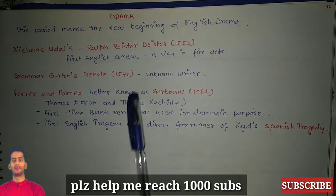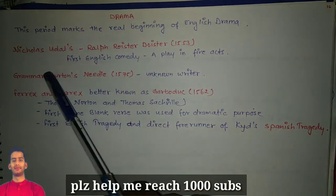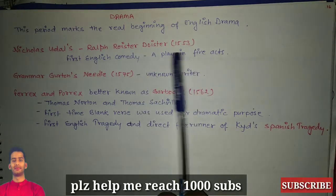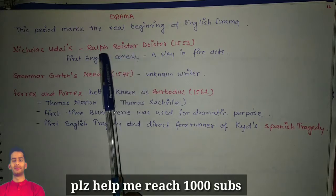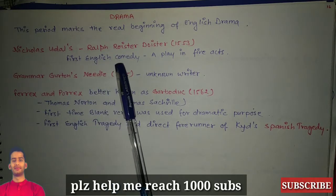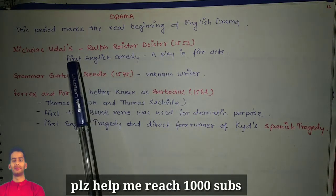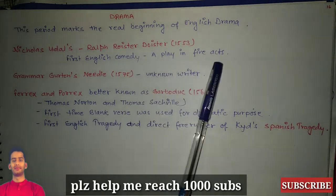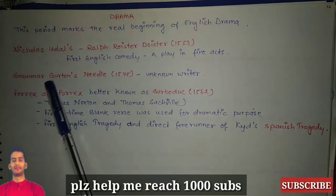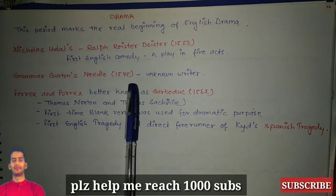There are different topics in the Renaissance period. First, we are going to talk about drama. This period marks the real beginning of English drama. The first work, the first drama, was Nicholas Udall's Ralph Roister Doister, published in 1553. This is the first English comedy and it has five acts. The next important work was Gammer Gurton's Needle, written in 1575, by an unknown writer.